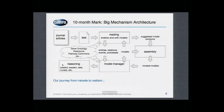Pretty much all of the systems being developed in Big Mechanism have this architecture. The systems read journal articles. They build up models of what's described in the article. They suggest revisions to models. Those revisions are processed and revised models are produced, with some model management happening. Downstream, we do some reasoning — about what causes what, where to apply pressure to a system to make it change its behavior.